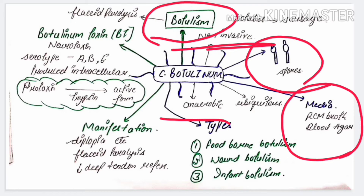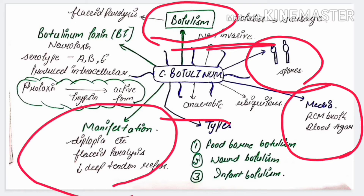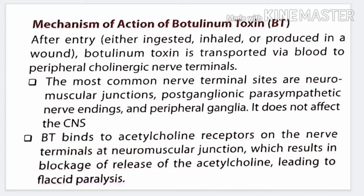The manifestations of botulism include diplopia (double vision), flaccid paralysis, decreased deep tendon reflexes, and constipation. There are no sensory or cognitive deficits. Respiratory muscle paralysis may lead to death.